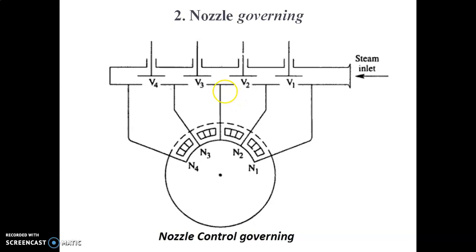The nozzle control is restricted to the first stage of the turbine, and the nozzle area in the other stages remains constant. In nozzle governing, the total available enthalpy drop is maintained, unlike throttle governing where the enthalpy drop is reduced at part load. This makes nozzle governing more efficient at part load, and it is suitable for simple impulse turbines of large units.